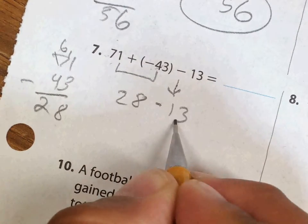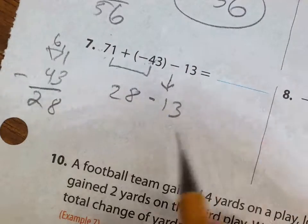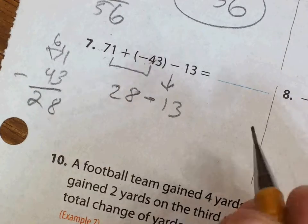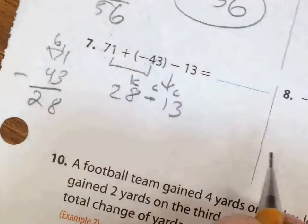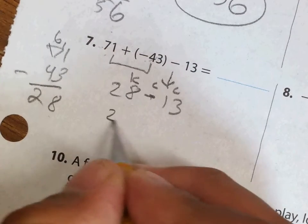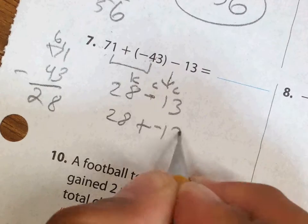And so I see this operation now is subtraction, so now I can use my KCC strategy, which is keep, change, change.